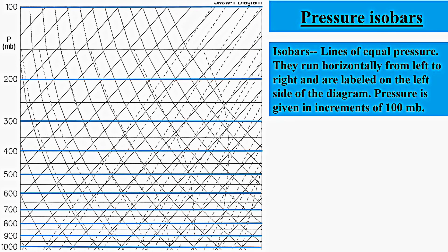In this image, highlighted in blue, you will see pressure isobars. As we learned several chapters ago, isobars are lines of equal pressure. On a skew-t, they will run horizontally from left to right, and will be labeled along the left side of the diagram in increments of 100 millibars.